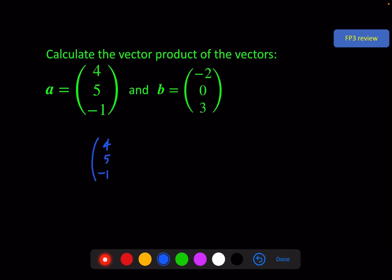4, 5, -1 cross -2, 0, 3. There's no other indication in the question as to the order, so I've kept the first vector on the left of the cross. For the top element I want 15 minus 0. For the middle element, 2 minus 12. And for the bottom element, 0 minus -10. And there is the answer.